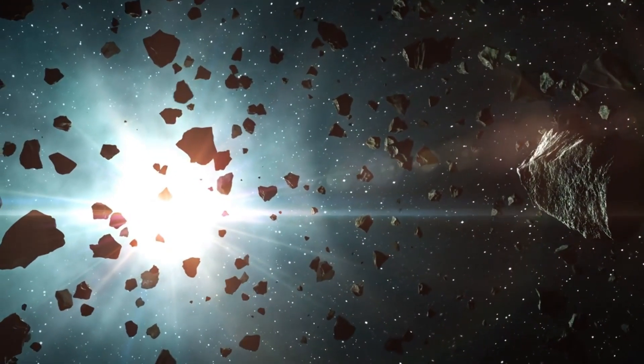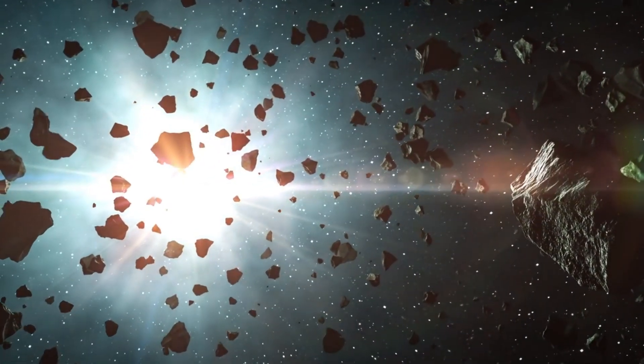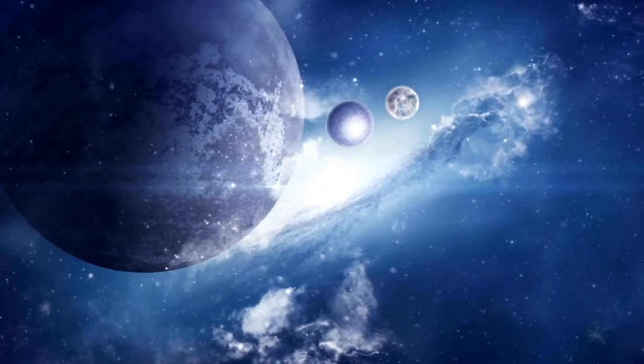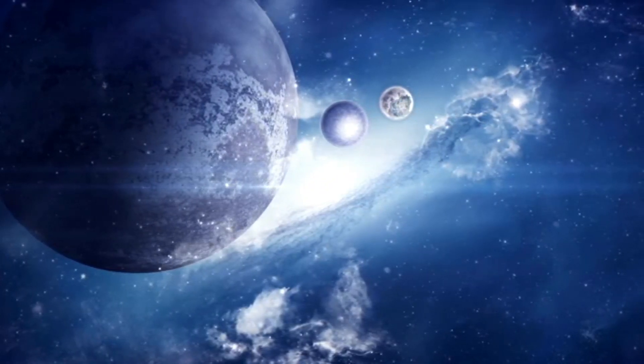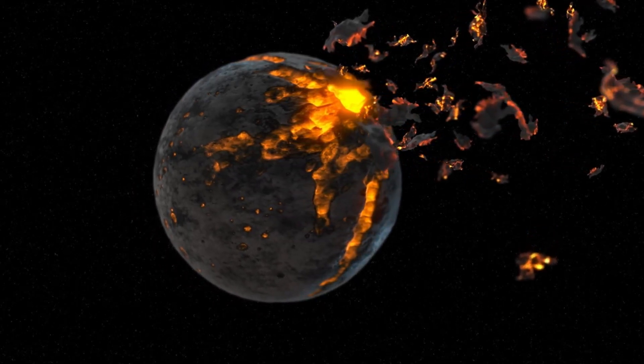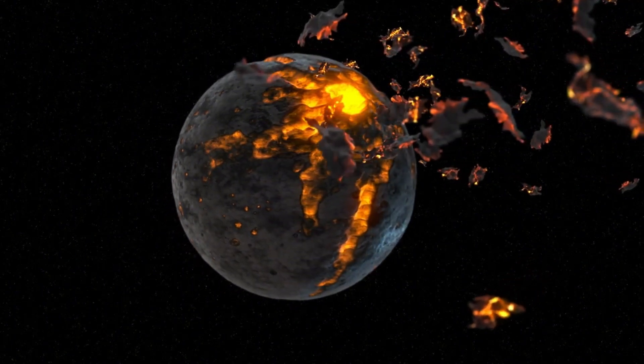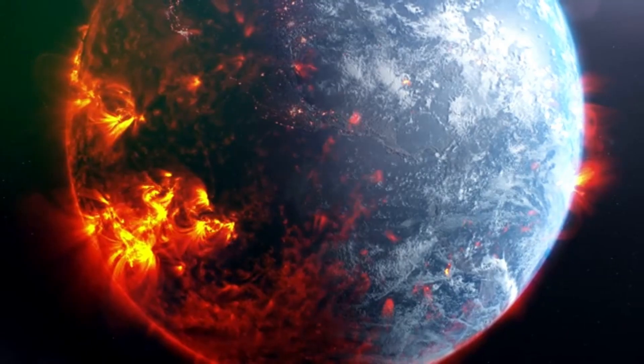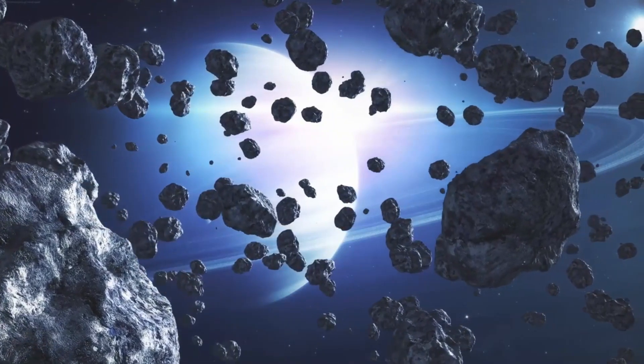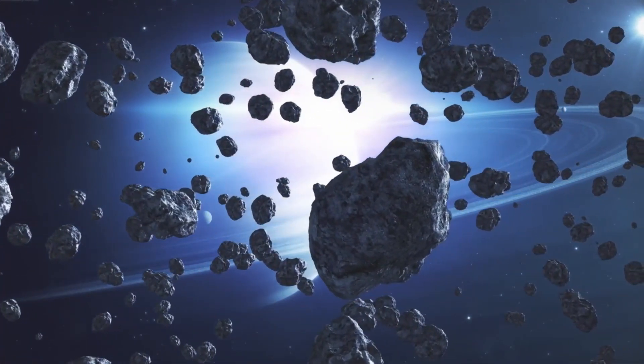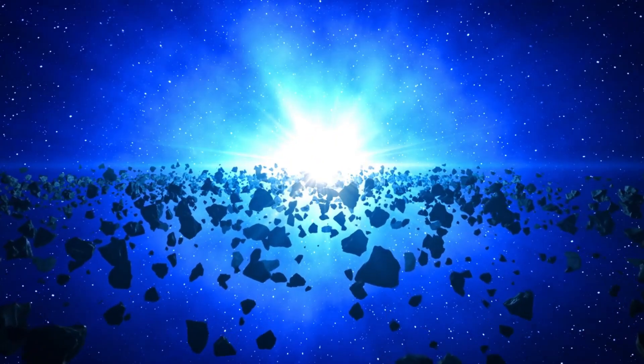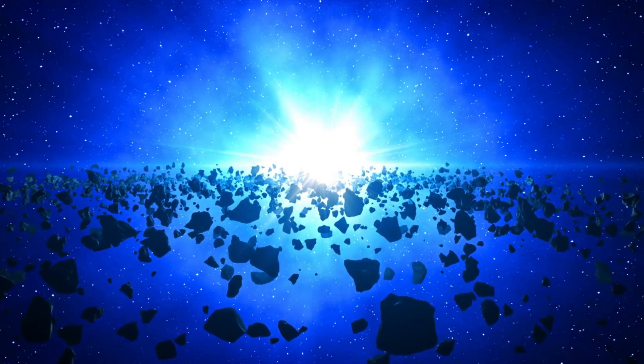Pluto's orbit crosses that of another planet. The frustrating little planet at the outer edges of our solar system is stirring up interest in the realm of space science. Emerging reports show a potential encounter with Neptune, raising concerns among experts and space enthusiasts. Prominent figures like Neil deGrasse Tyson and Michio Kaku have sounded alerts about the repercussions of this cosmic event.